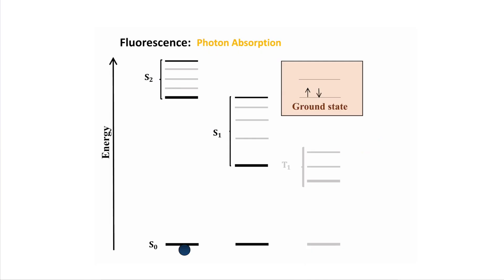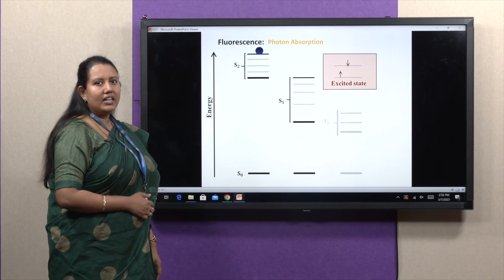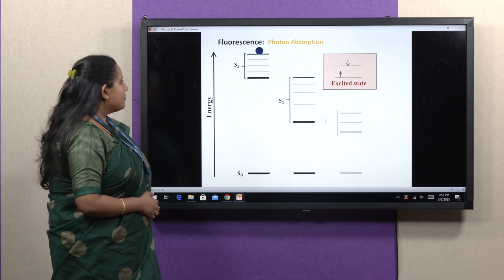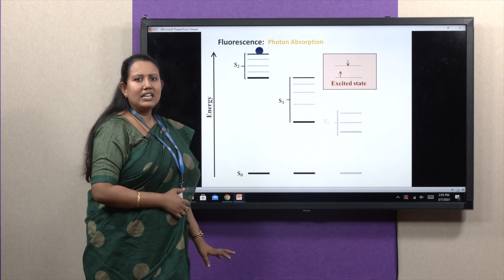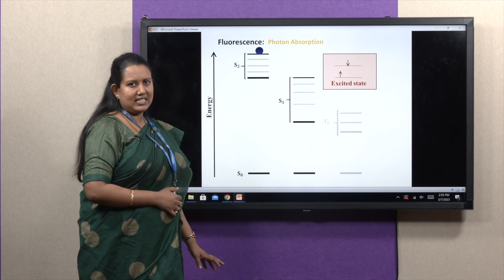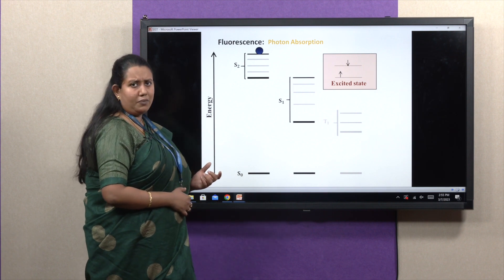When a molecule is bombarded with electromagnetic radiation, it absorbs the energy and goes to the higher excited state. This process is called absorbance. The lifetime of this process is 10 to the power minus 15 seconds. So it is a very fast process.